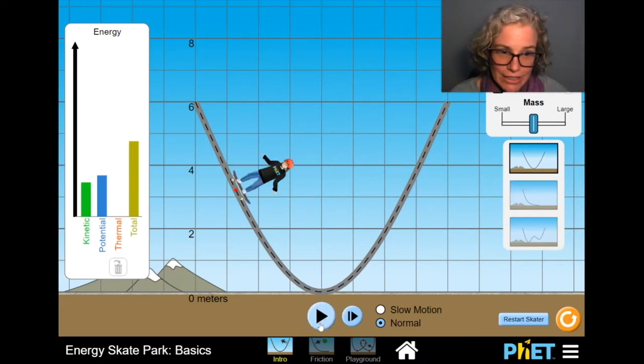First of all, this is not reality, right? There's no friction. In real life, you wouldn't just be able to go back and forth to the same height every time. We'll look at that in a moment.